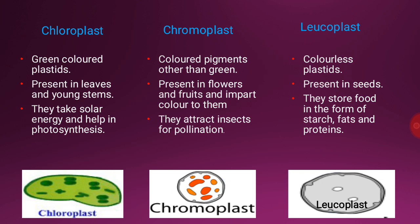Chromoplast contains colored pigments other than green. They are present in flowers and fruits and impart color to them. As they impart color to flowers and fruits, the function of chromoplast is to attract insects for pollination.